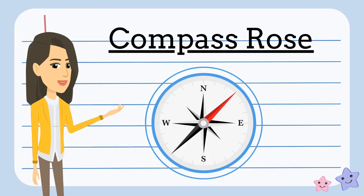Maps and globes use four main directions: north, south, east, and west. These directions help us find places on a map.